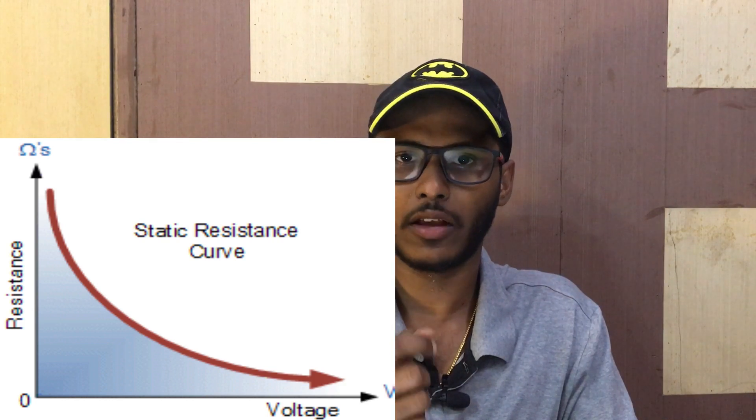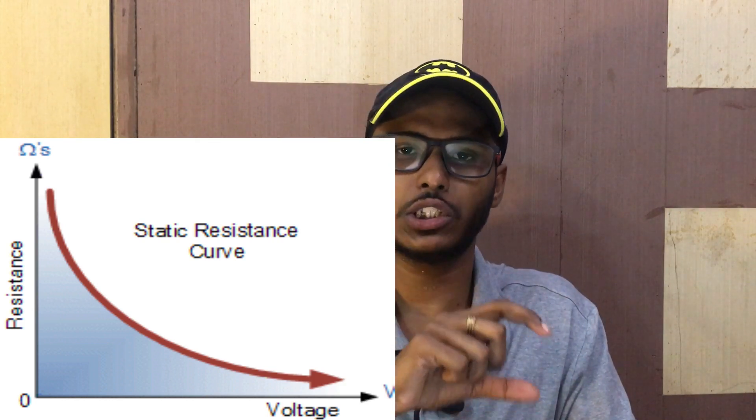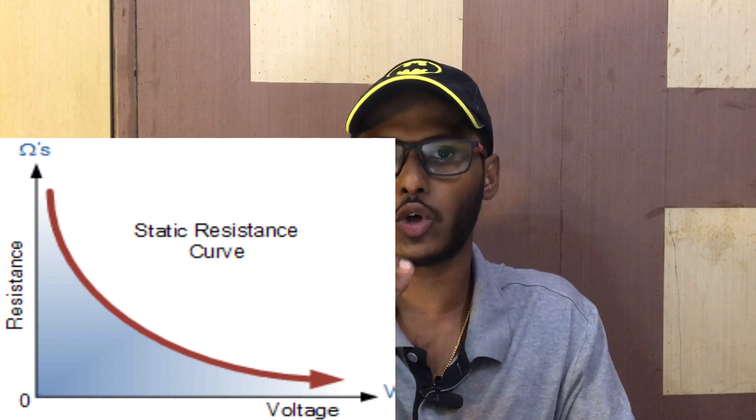We can also look at the resistance-voltage characteristic graph of the MOV: at low voltage it shows high resistance, and as voltage increases the resistance drops sharply. This behavior is the defining characteristic of the MOV. Based on this, the MOV is the core component inside a Surge Protector, which extends the life of our electrical devices and prevents high damage.